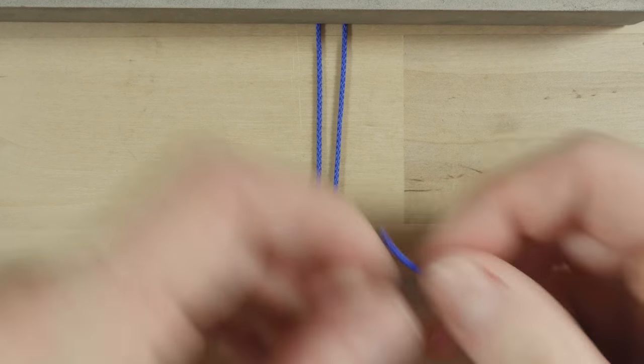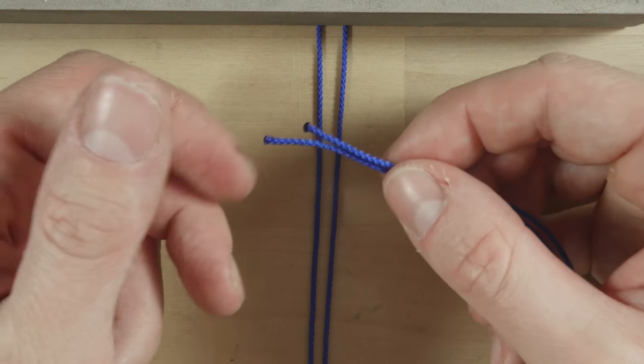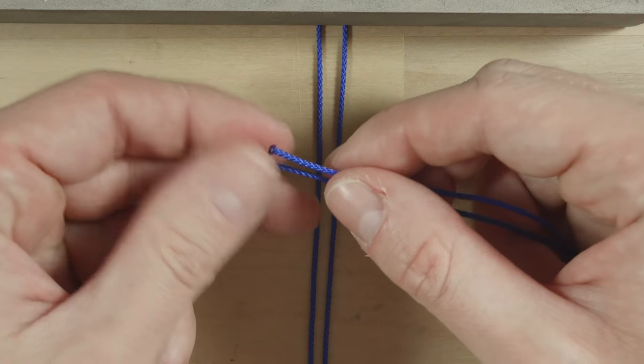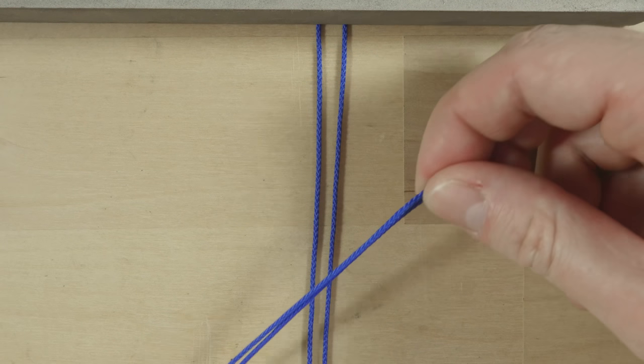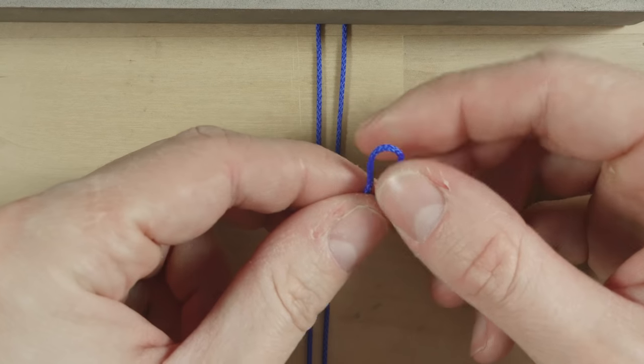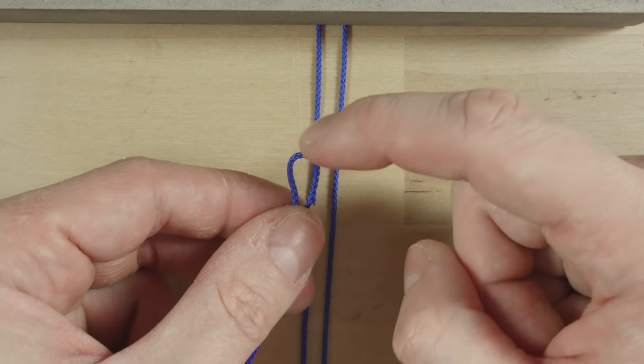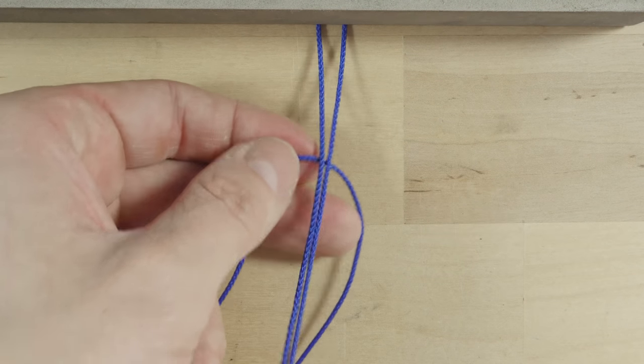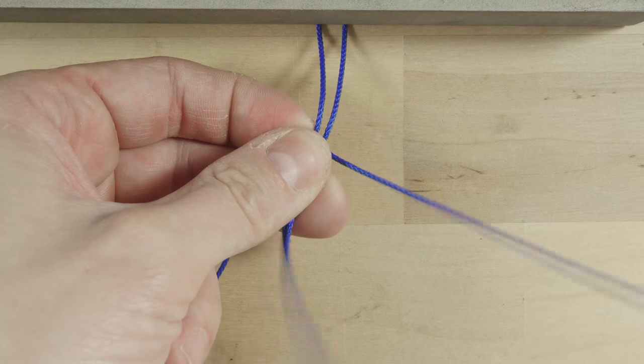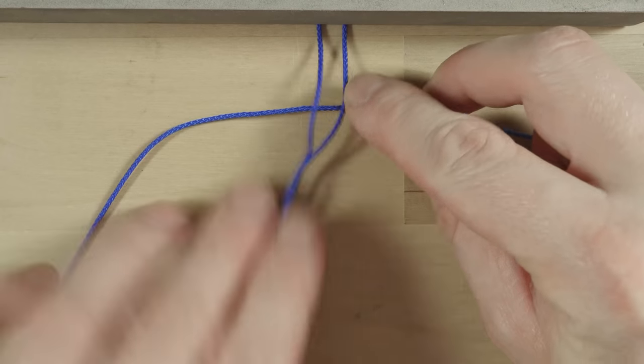Then, I'm going to take my long cord, 6 feet long, fold it in half, and place it under my short cord at the middle point. Like this.